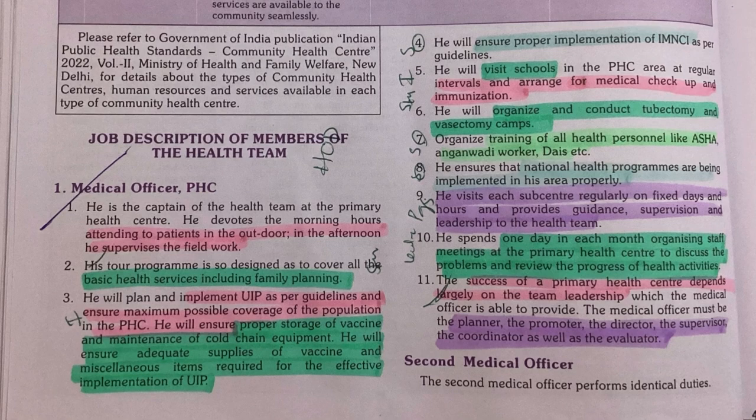Point number five: the Medical Officer visits schools, arranges medical checkups, and follows up on immunization. So based on vaccinations, we have two points — proper storage of vaccines and the conduction of immunization programs in schools.